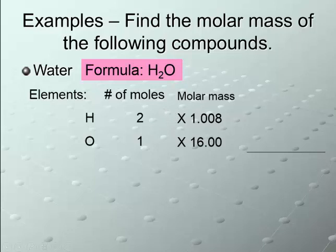Oxygen is 16. So, now, we multiply, because we have 2 moles of hydrogen. Each mole has a mass of 1.